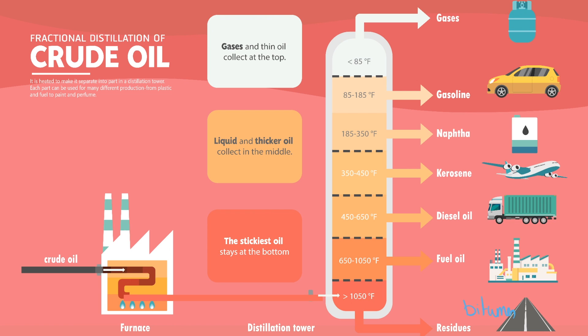We have gases at the top, then petrol, naphtha, kerosene which is fuel for planes, diesel, and then fuel for boats. Short hydrocarbons are going to come off at the top and long hydrocarbons are going to come off at the bottom.